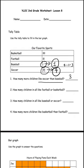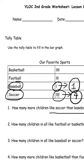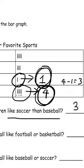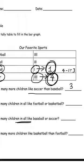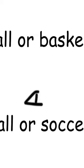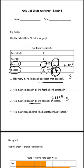Number 3 says, how many children in all like baseball or soccer? Again, it's baseball and soccer. We had 1 person that likes baseball and 4 people that like soccer. We have to add them because it says 'in all,' which means we add. 4 plus 1 is 5. So 5 children like baseball or soccer in all. 5 is the answer for number 3.